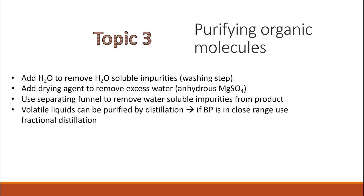If you have a volatile liquid product, you use distillation. Make sure you know how to do the distillation and the direction of water in the condenser — it comes from the bottom to the top, not the other way around. For reflux, make sure you don't cover the condenser at the top, otherwise pressure will build up inside. If the boiling points of the different reactants and products are in close range, you need to separate them using fractional distillation rather than simple distillation.